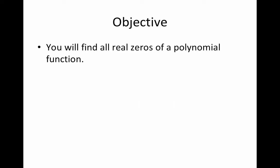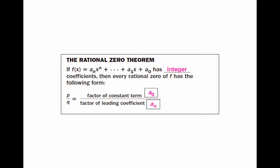Because we know that zeros of polynomials result in a remainder of zero when you do synthetic division, one of the things we're able to do is find all the real zeros of a polynomial function. Now how do we know where to even start? There's an infinite number of numbers, but luckily we have a way of getting down to a manageable number of potential rational zeros.